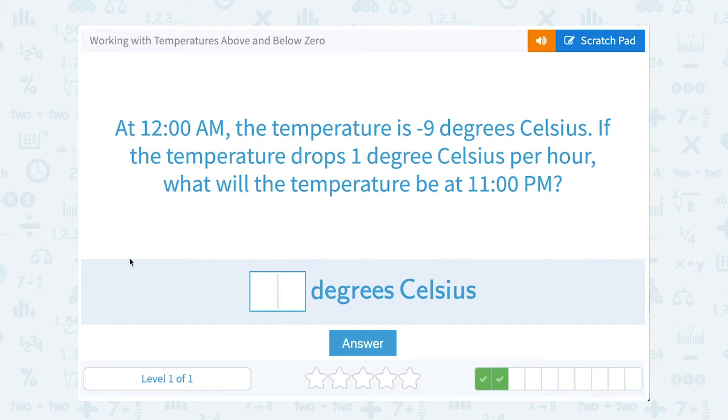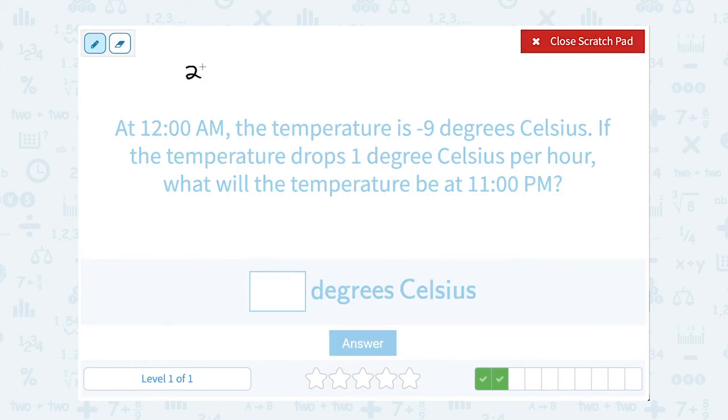At 12 a.m., the temperature is negative 9 degrees Celsius. If the temperature drops 1 degree Celsius per hour, what will the temperature be at 11 p.m.? So 12 a.m., or midnight, how many hours is that from 11 p.m.? Well, it's almost a full 24 hours. If we got back to 12 midnight or 12 a.m., that would be 24 hours. 11 p.m. is one hour before that. So 23 hours have passed.